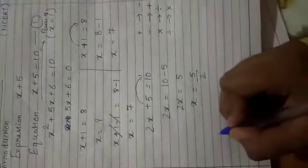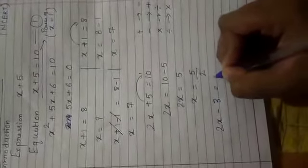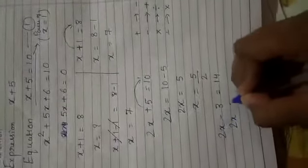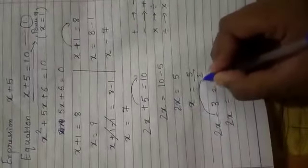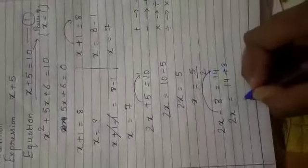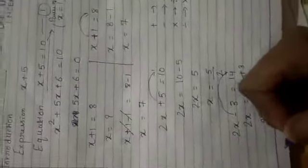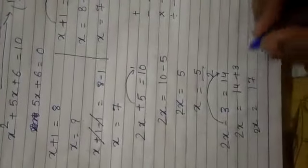Now suppose I have minus example, 2x minus 3 equal to 14. Same, if minus is here, what will happen when transposed? Plus. This minus becomes plus, so it will be 17. So 2x is equal to 17, now 17 divided by 2, x is equal to 17/2.